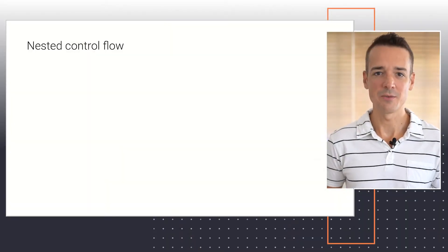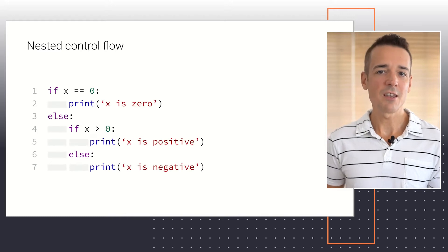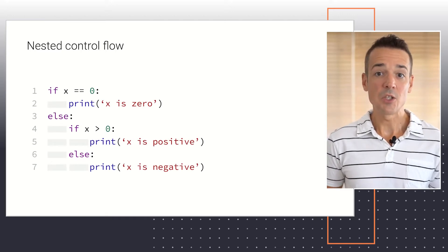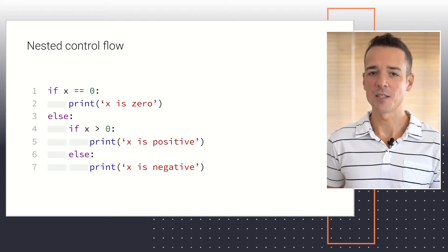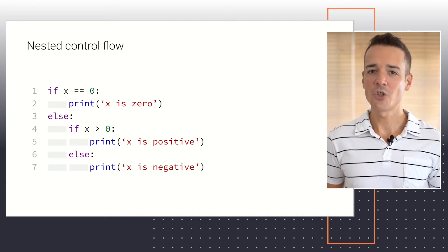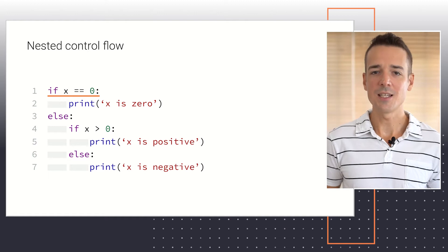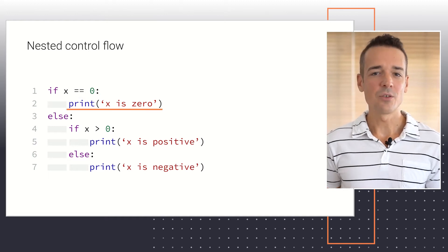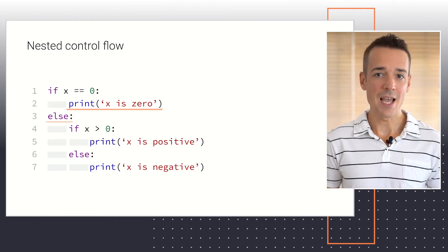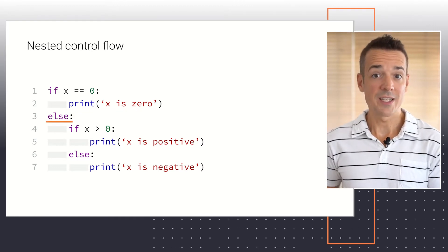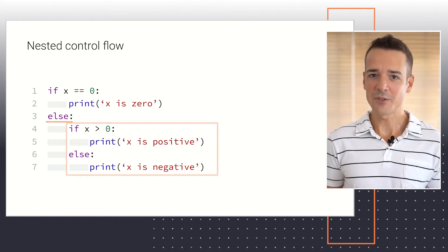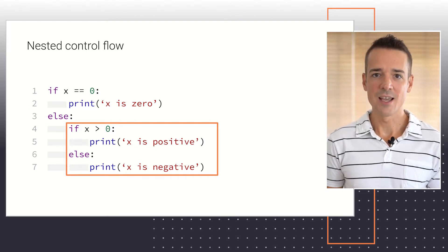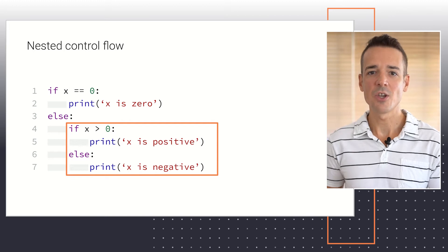Here's an example of what I'm talking about. The following code does something very similar to what we've seen in previous lessons, but using nested if statements instead. The code first checks whether a variable x is 0, and if so, it prints 'x is 0'. Otherwise, it begins the execution of the else block. But under this else block, we have another if statement, which checks whether x is greater than 0 or not, and prints the corresponding message in each case.